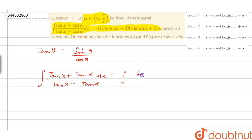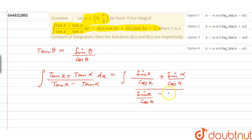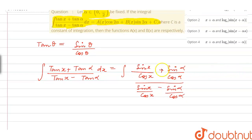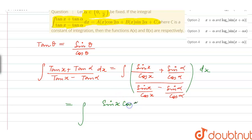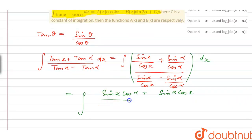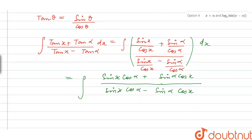This is the same as sin(x)/cos(x) plus sin(α)/cos(α), all divided by sin(x)/cos(x) minus sin(α)/cos(α). Taking LCM, the numerator becomes sin(x)·cos(α) plus sin(α)·cos(x), and the denominator becomes sin(x)·cos(α) minus sin(α)·cos(x), times dx.